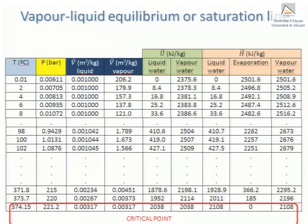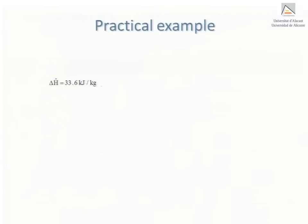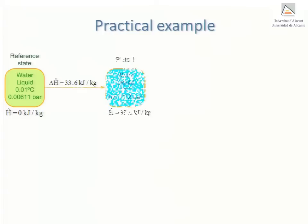We now practice reading from the steam tables by looking up the enthalpies of physical states of water corresponding to the saturated region. For example, the enthalpy of liquid water at 8°C and 0.01072 bar may be read directly from the accompanying table — it is just 33.6 kJ/kg. This value represents the change in specific enthalpy in going from the reference state to the final state. It is now very clear that enthalpy cannot be an absolute value, but is instead referred to the reference state specified.